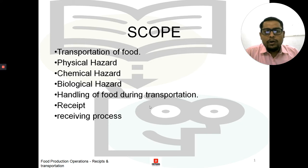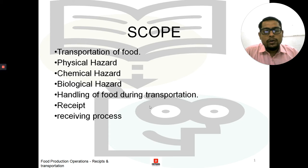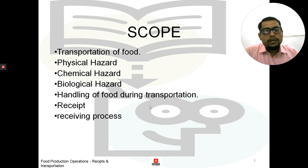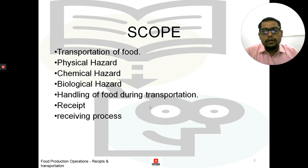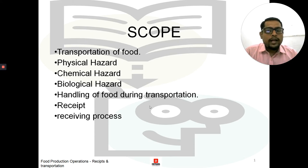Whenever we talk about transportation and receipts in context of hotels and restaurants, we always think of the hazards that occur during the transportation of a food product while receiving or sending it out. There are a few hazards we will be covering here: first would be a physical hazard, then a chemical hazard, then biological hazard, then handling of food during transportation, and then receipts and receiving procedure.